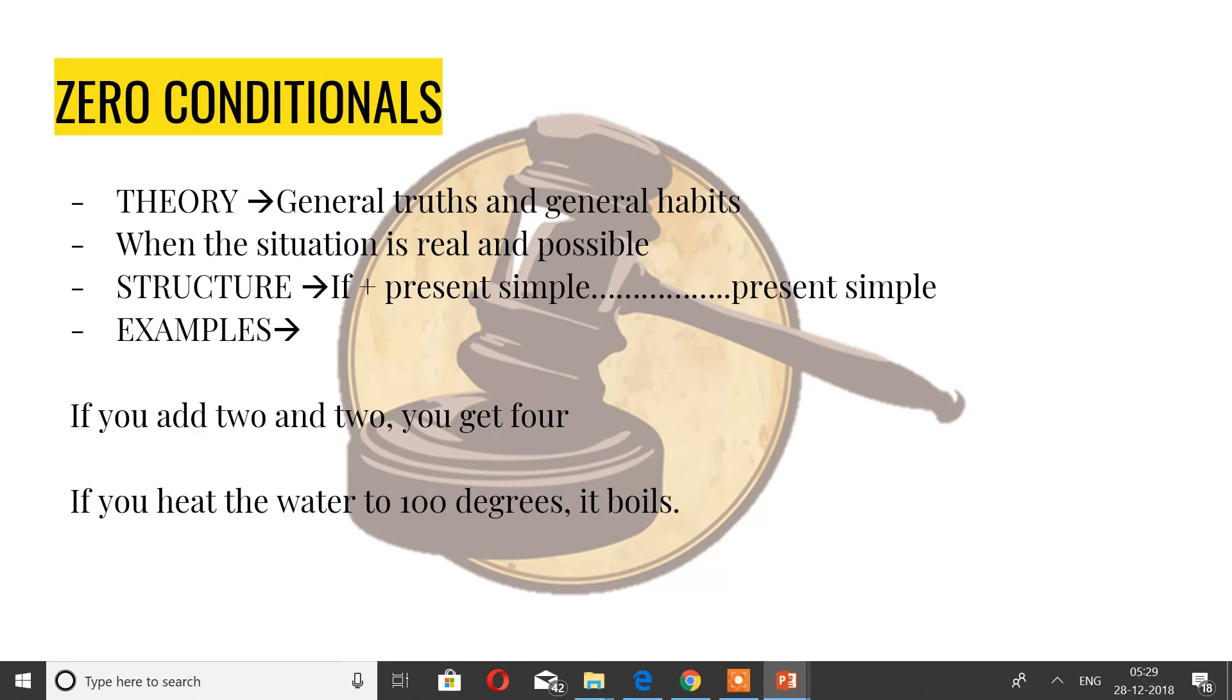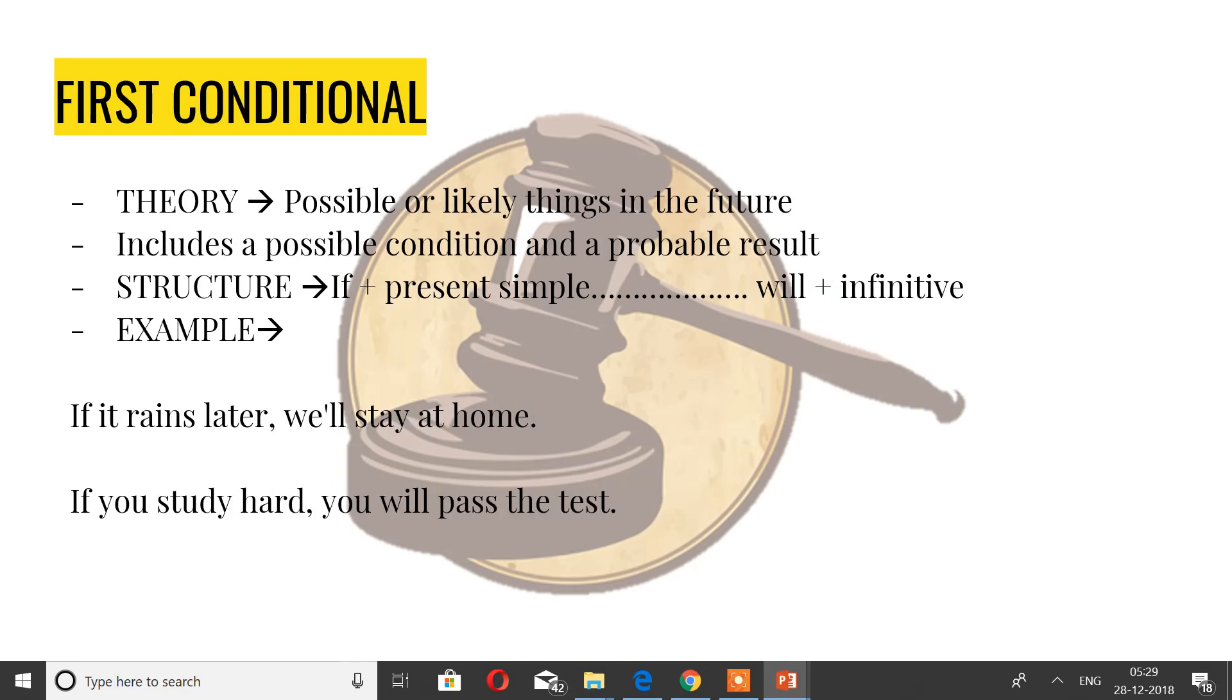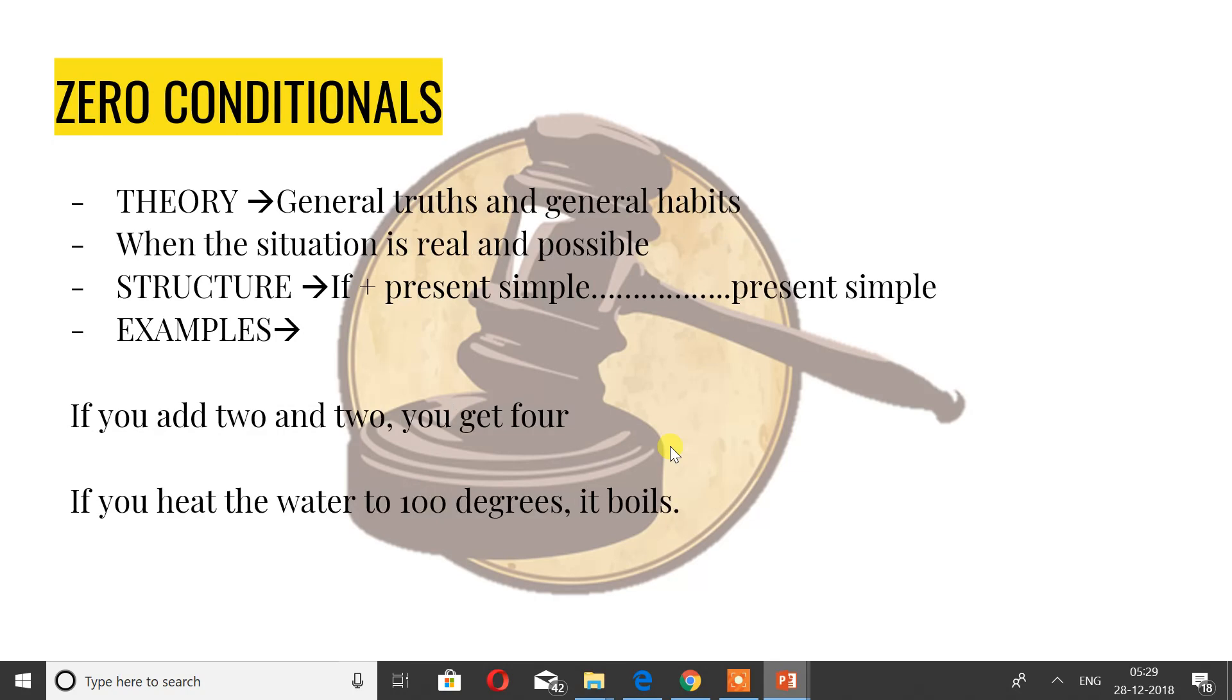There are four types of conditionals: zero conditional, first conditional, second conditional, third conditional. There is also one mixed conditional but that makes it too complicated so we are not venturing into that. I'll have three parts to explanation: first is the theory, second is the structure, and third is the examples.